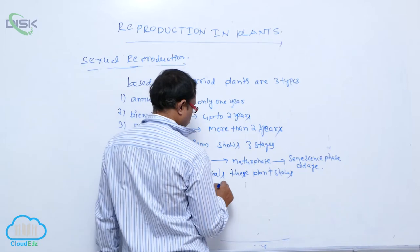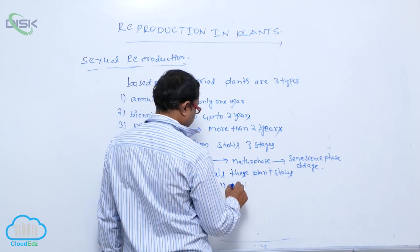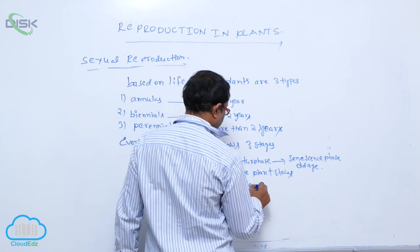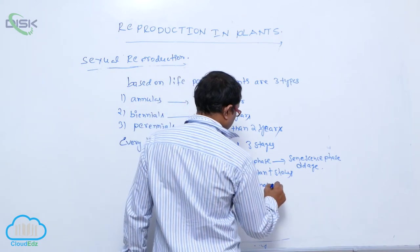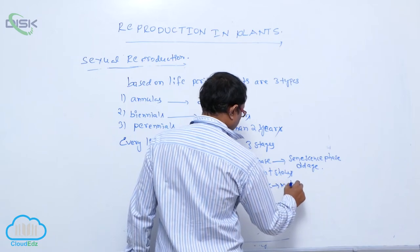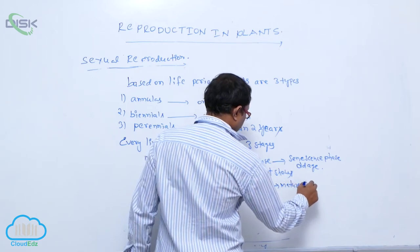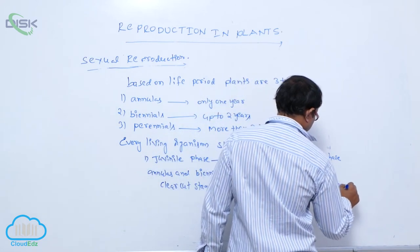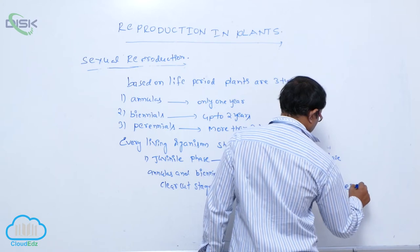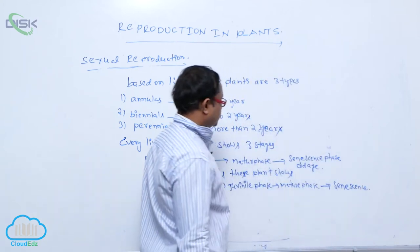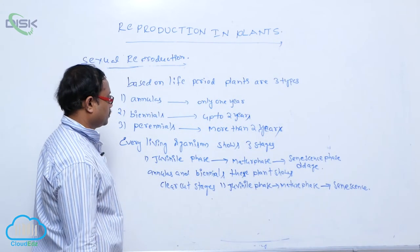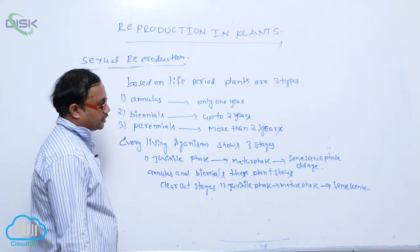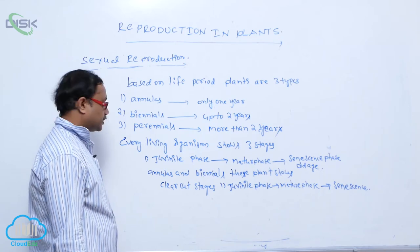What are they? First one is the juvenile phase, then mature phase, after that senescence phase. Annuals and biennials, these plants show the clear-cut stages: juvenile phase, mature phase, and senescence phase.